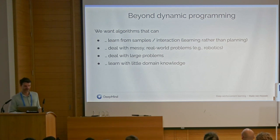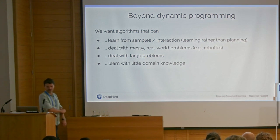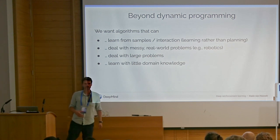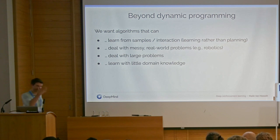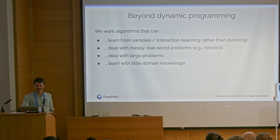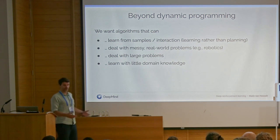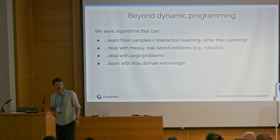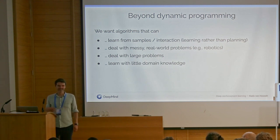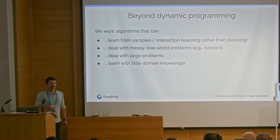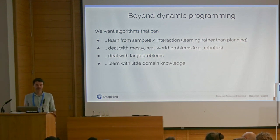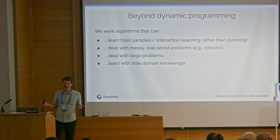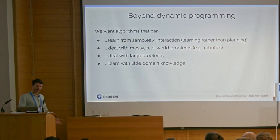We want algorithms that can learn from samples and interaction rather than only by planning, to deal with real world problems with messy inputs. Think of a robot with a noisy camera sensor — you can't reason about planning through an MDP. We want to deal with large problems: even a robot with a small camera typically has tens of thousands of pixels at minimum, giving you an immediate input that is already a thousands-dimensional real-valued space. We also want to learn with little domain knowledge — for instance to find very general methods that you can use on many different problems, perhaps allowing domain knowledge to be added while still sharing the learning algorithms.